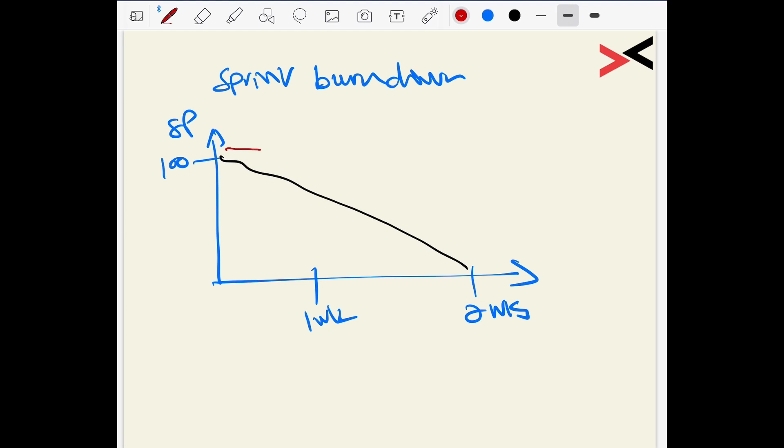But what happens in reality is that the team will start working on it and nothing would happen. And suddenly they would burn, they would move the story to done. And then they'll work on another story. Once they finish done, it'll go down like that. So the idea is to stay within this black line to finish on time.